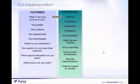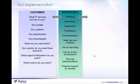The left-hand part of the slide looks at customers and the types of information we need from them: the priority of services, which services are key, their key people and systems, key departments, key times and targets. We need to understand when they need the services, how quickly services need to be restored in an emergency, what support information they need, and how they feed back into the review process — because the IT-business relationship must include customers in these reviews.